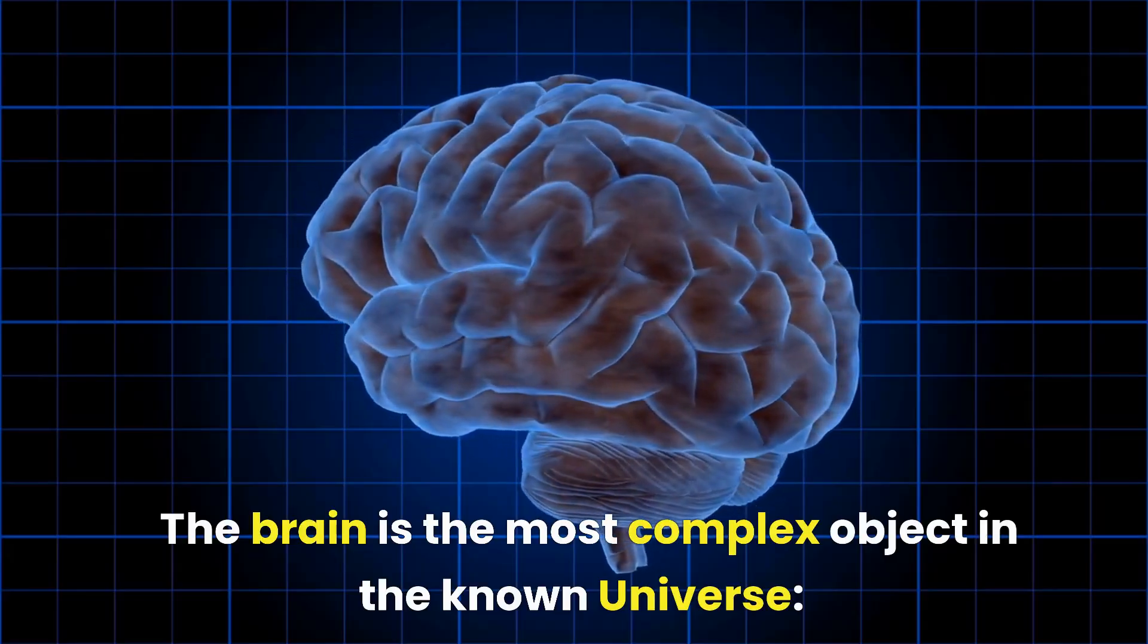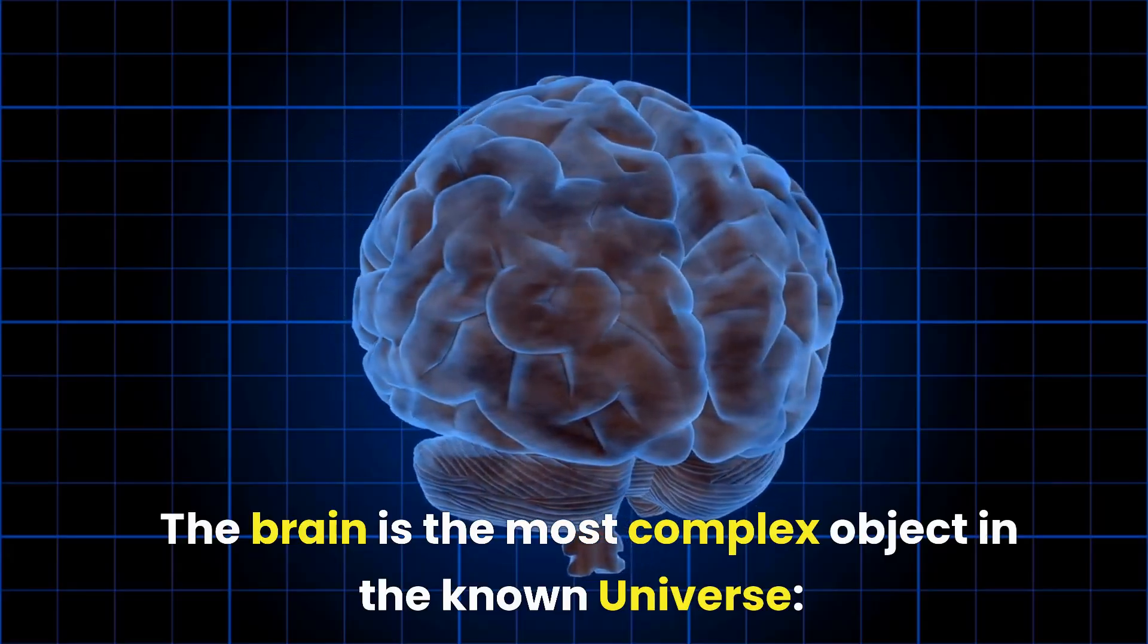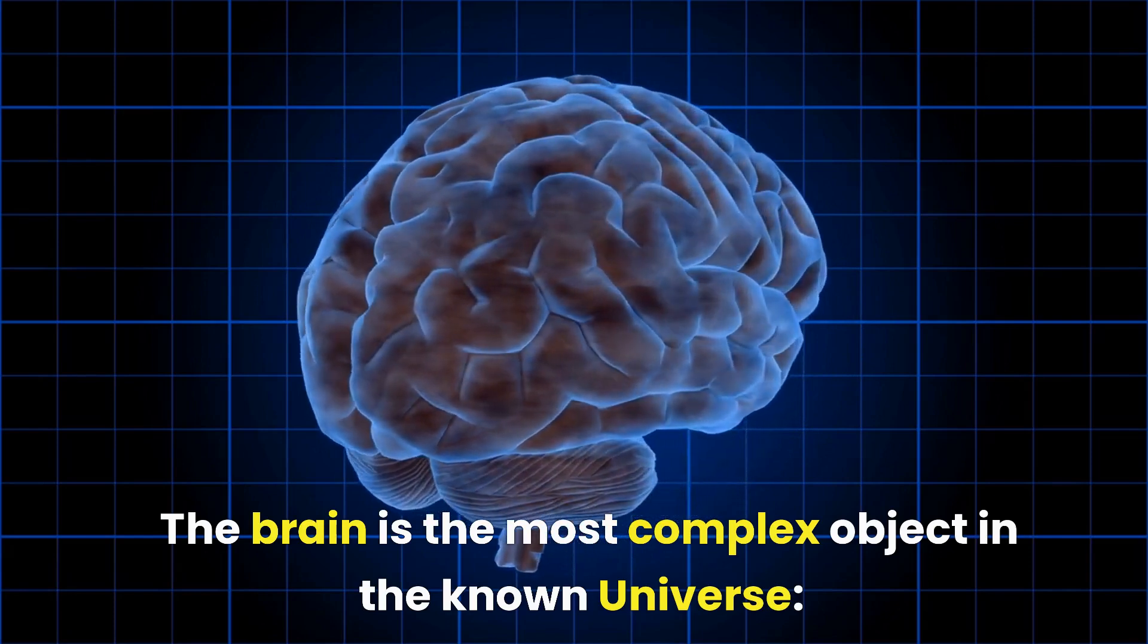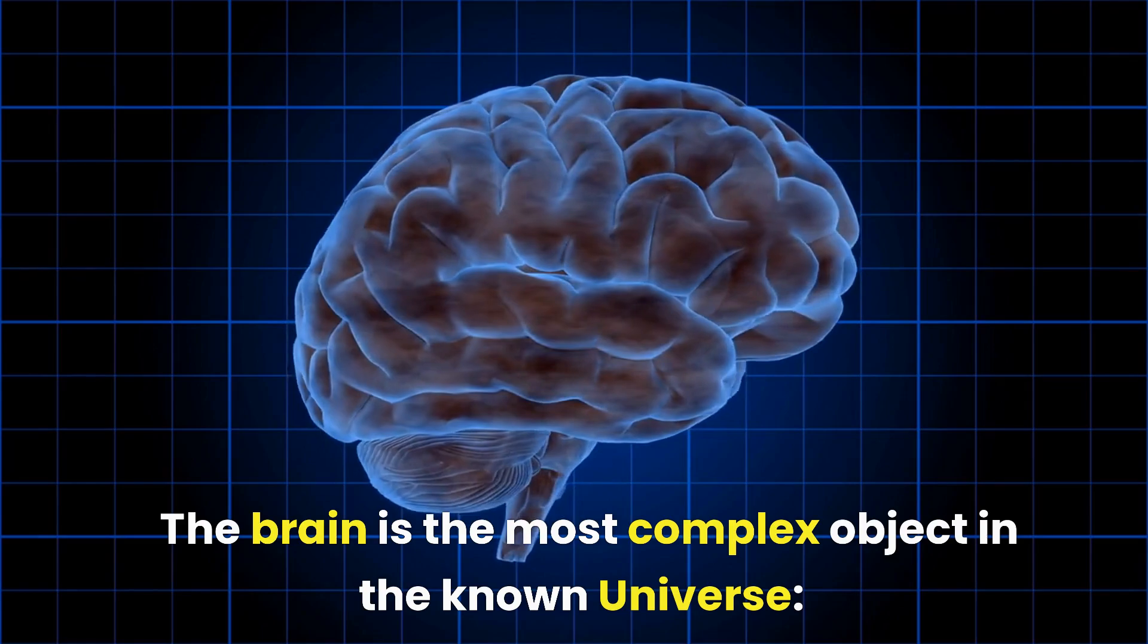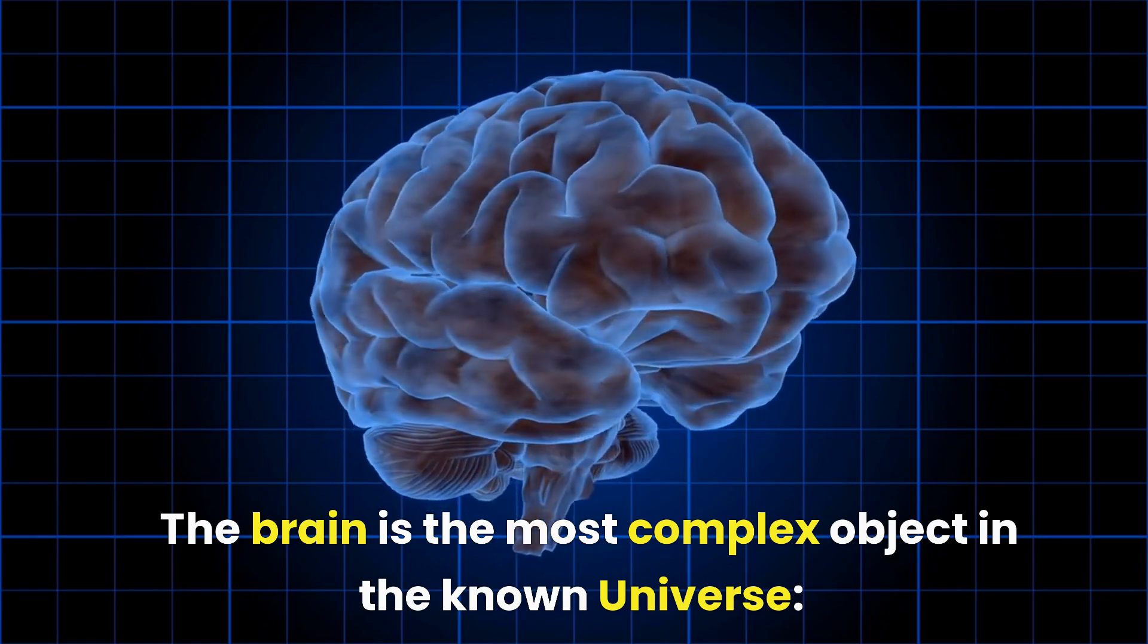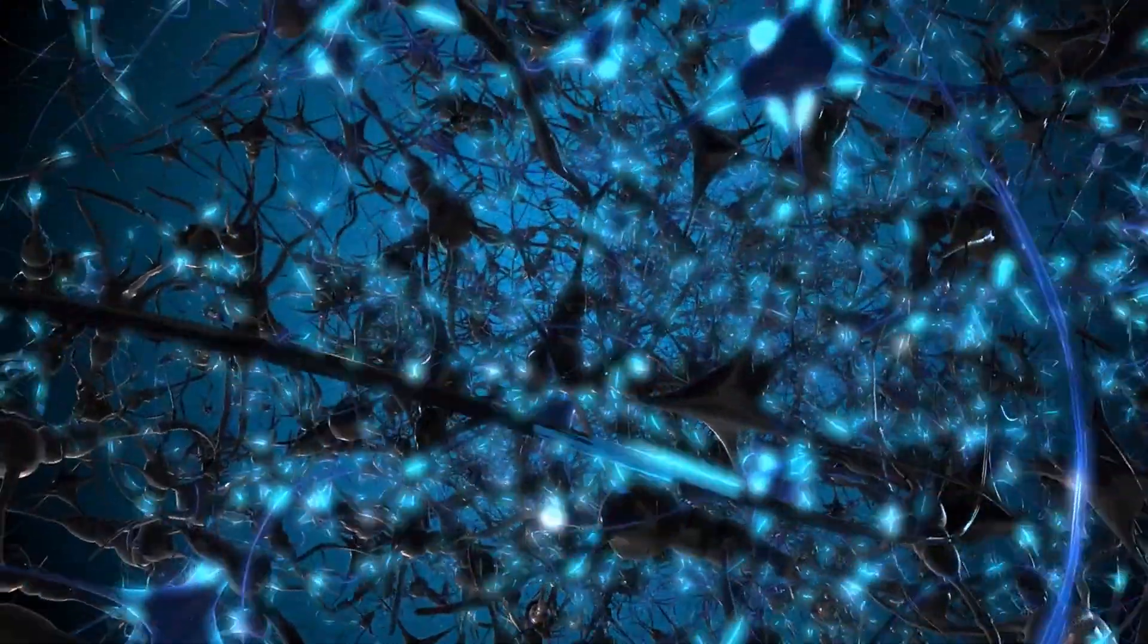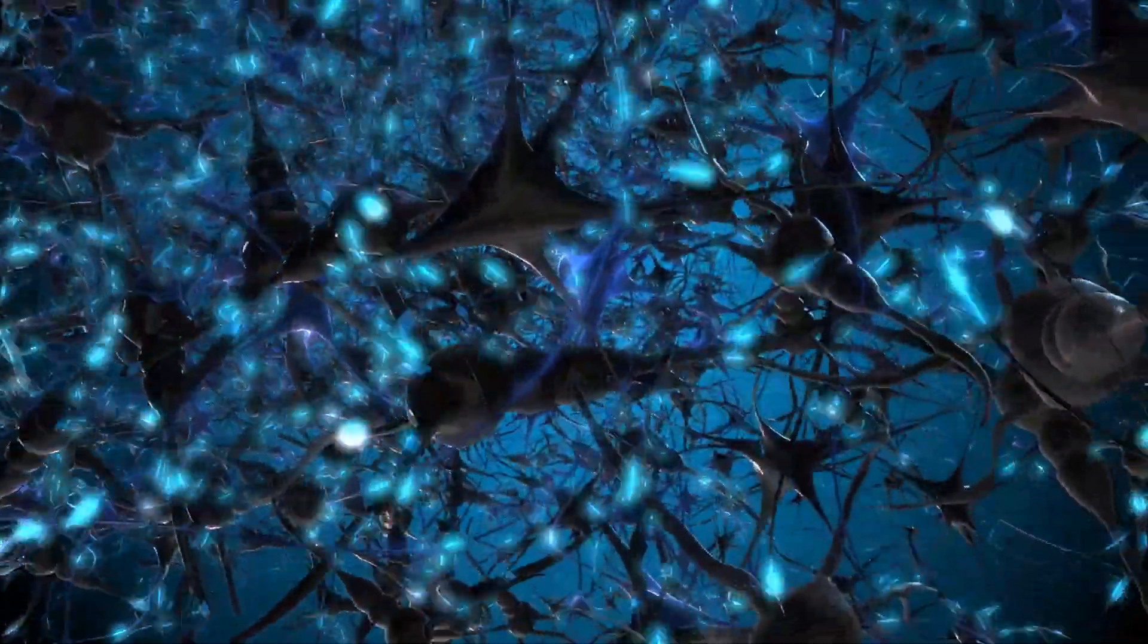The brain is the most complex object in the known universe. The human brain is a truly remarkable organ, and it's the most complex object known to us in the entire universe. It has over 100 billion neurons, and each one of them can form thousands of connections with other neurons.